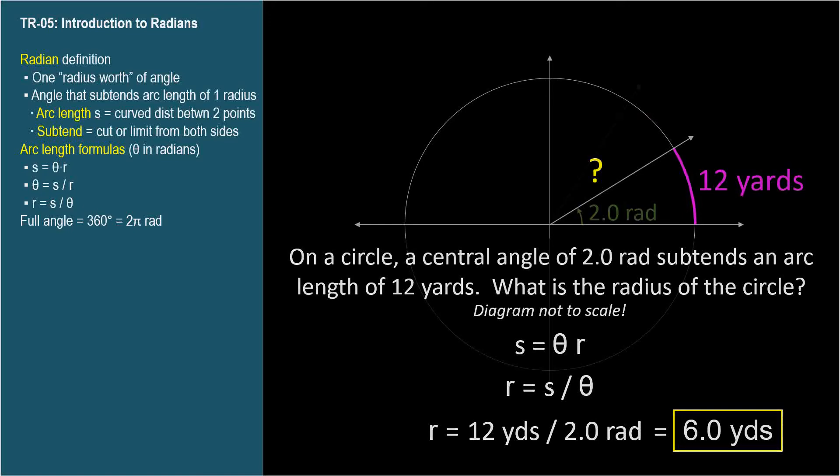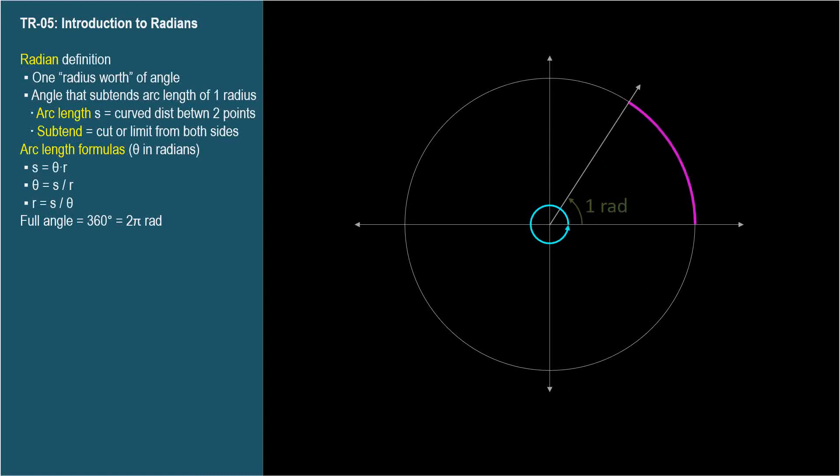We know that 360 degrees makes up a circle, or full angle. So how many radians are in a full circle? Since one radian is one radius worth of angle, this is the same thing as asking how many radii are in a circle's circumference.